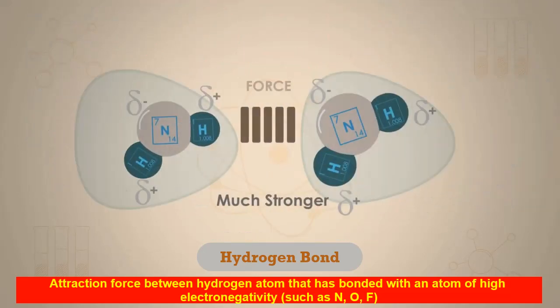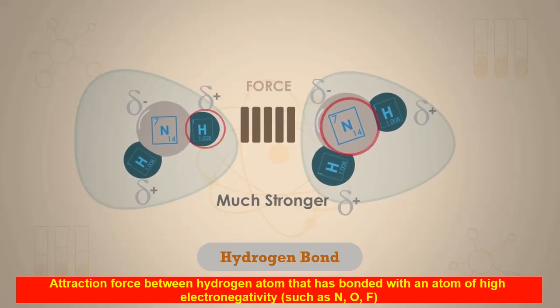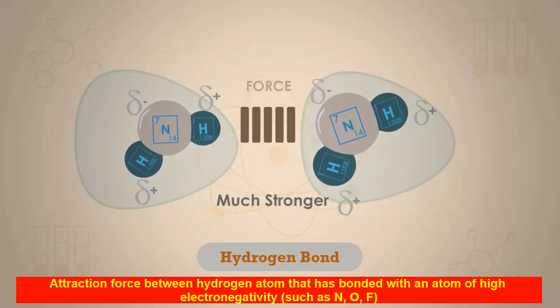This particular type of dipole-dipole attraction between the electron-deficient H-delta-positive of one molecule and the lone pair of electrons on a fluorine, oxygen, or nitrogen atom of another molecule is given the special name of hydrogen bond.